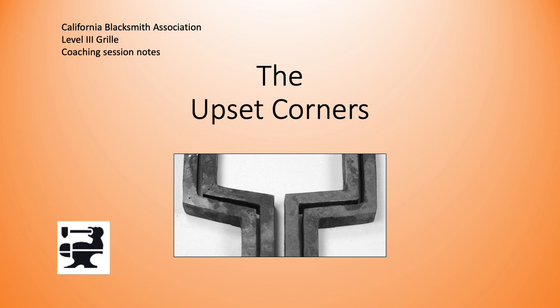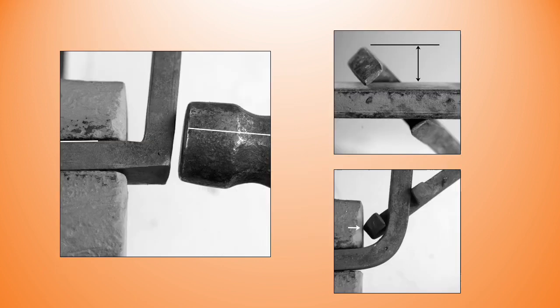Welcome to another CBA coaching session for the level 3 grill. This session follows along from the volume and area calculations from the leaf scroll assembly to the upset corner. Let's do a little review of forming the upset corners. I'm calling them upset corners, trying to avoid calling them upset square corners, as I don't take the corners to 90 degrees. If you look at the drawing, they are slightly open of 90 degrees.